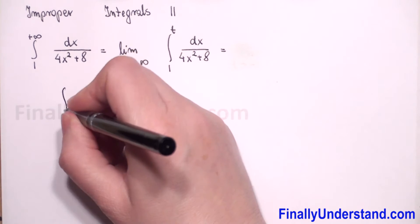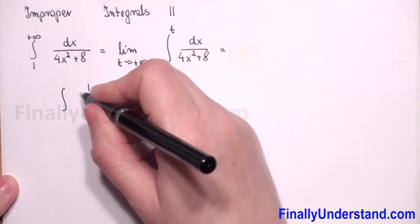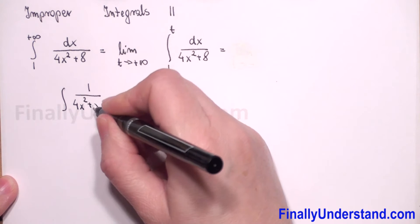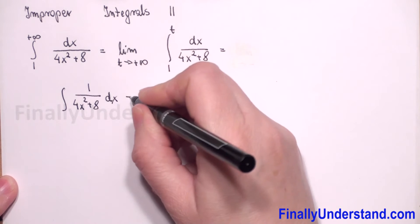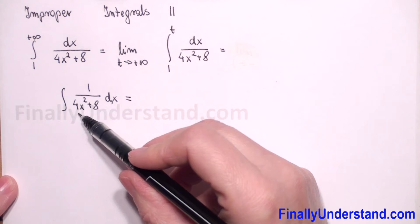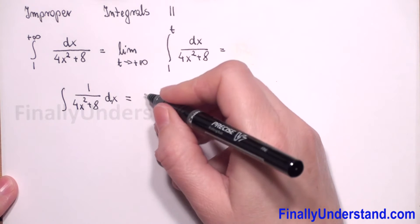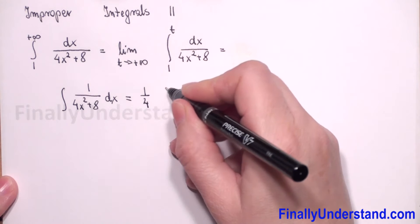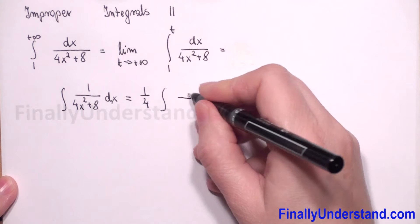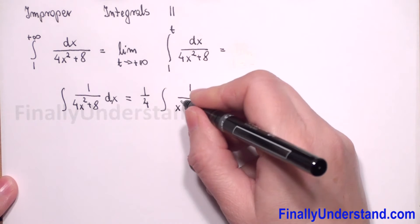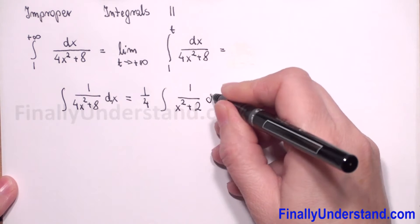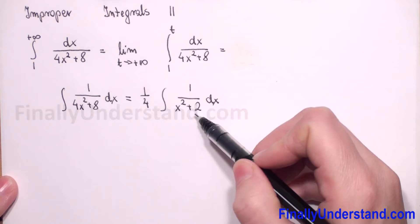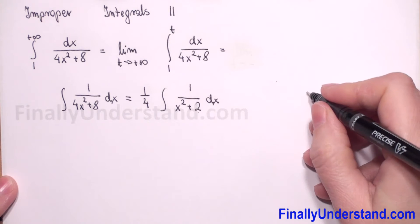Let me rewrite this integral: we have 1 over 4x squared plus 8 dx. First I will factor out 4, so it will be 1 over 4, which I can put before the integral symbol, and we have 1 over x squared plus 2 dx.